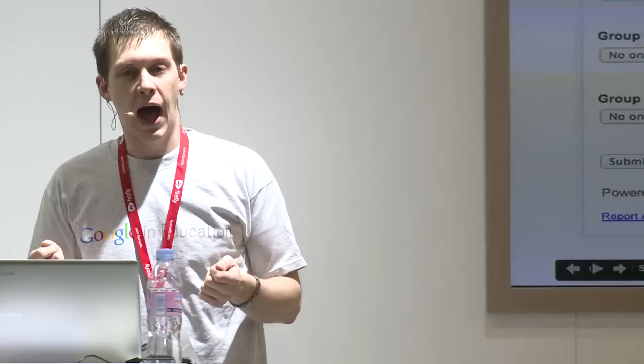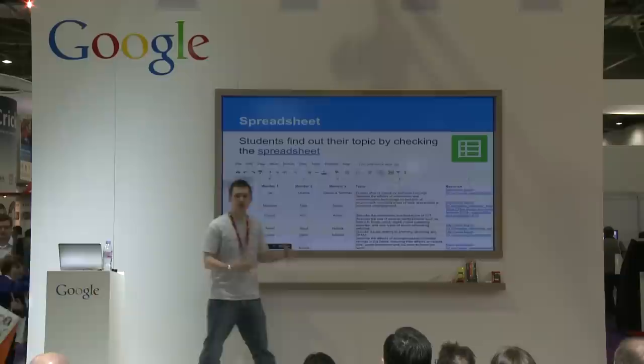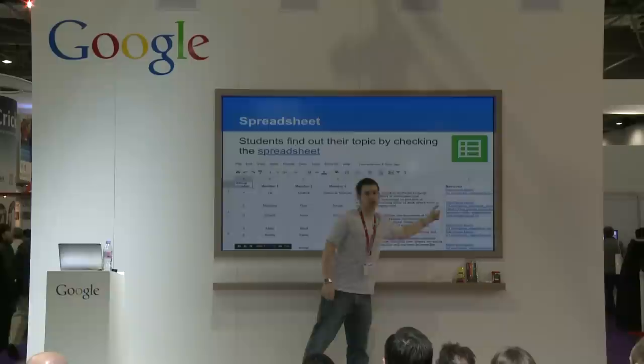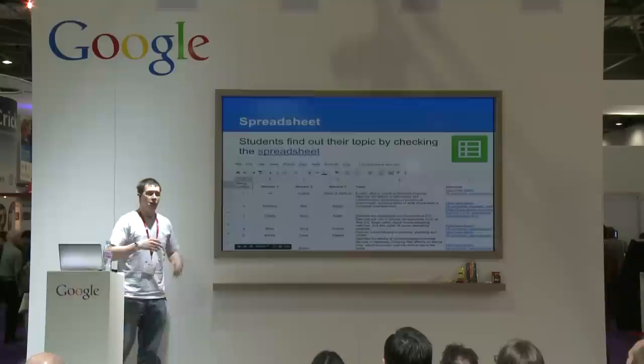Students in groups choose member one of the group, member two, member three, and then that feeds straight back into my spreadsheet. Once that's done, I get this spreadsheet here, and I've pre-populated the list of topics which are down here. Once they get their groups, they're given their topic, and then I've also got some research links for them to click on. This takes about five or ten minutes for them to get themselves into groups and find their topic, and off they go.